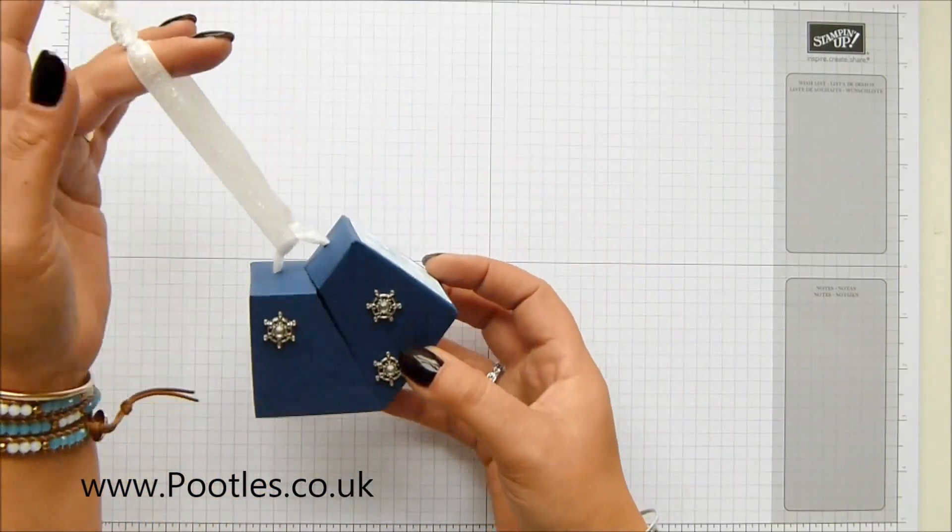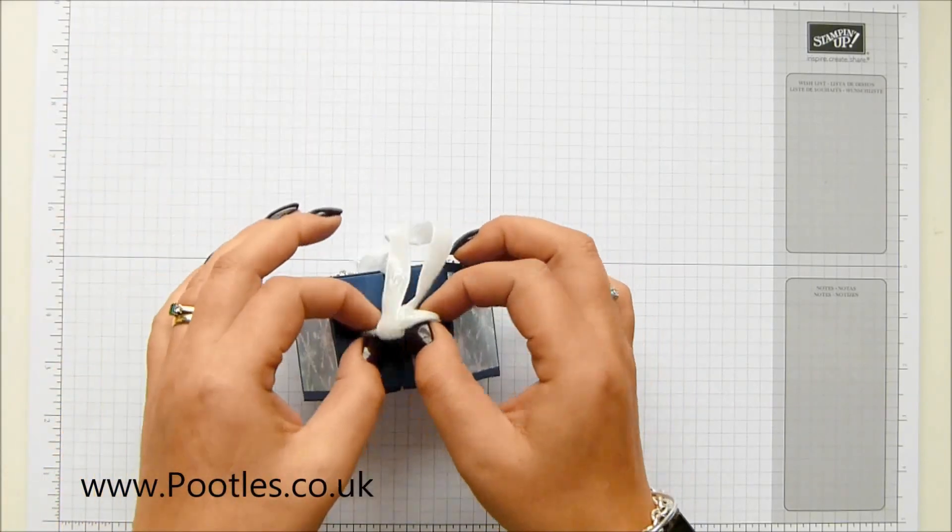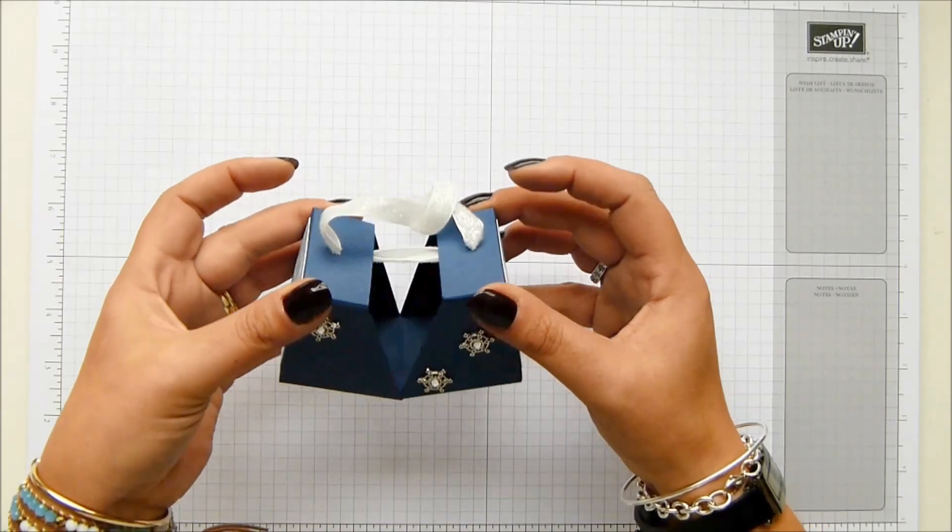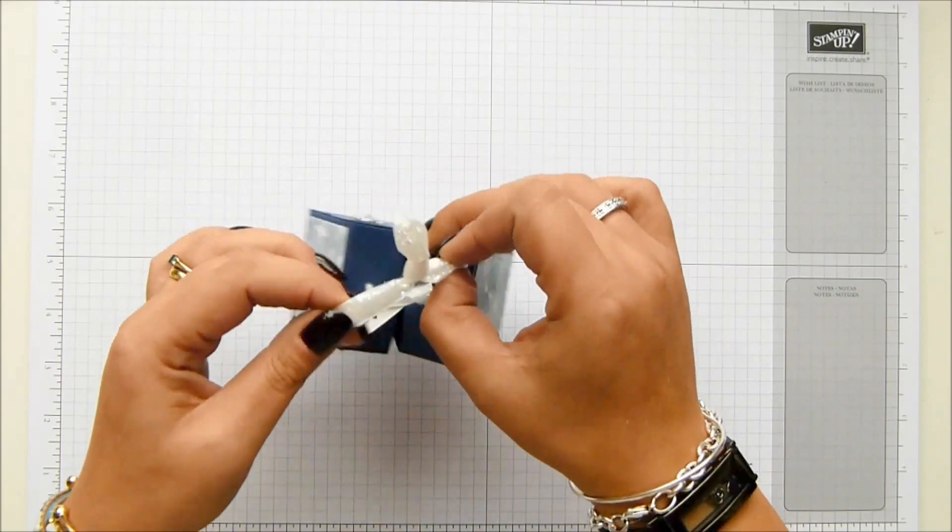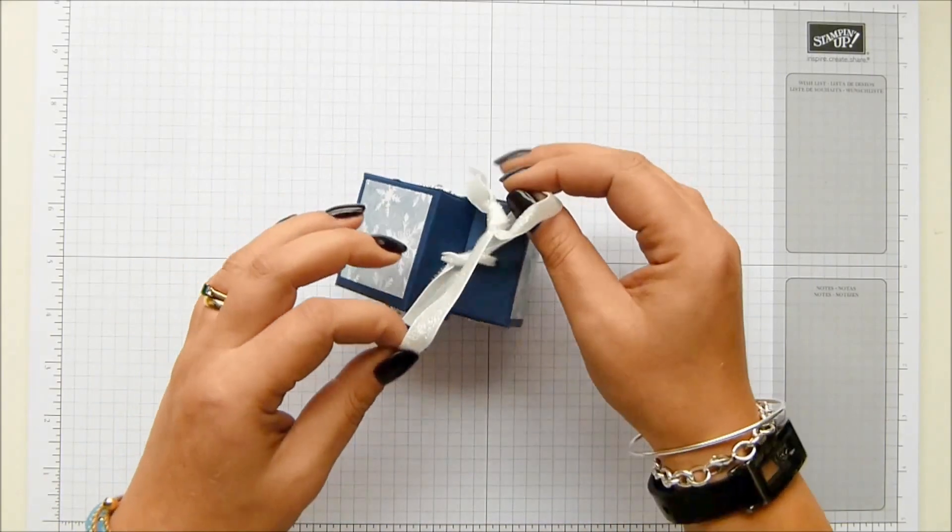It's a hanging gift box and that's how it would hang on your tree like that, but you can still open it without trashing the box because you simply open it like that and open it up and your goodies and gifts and treats go in there. It's awesome and I love it. I love a happy accident which is exactly what this was, but I'm going to show you how to make it.